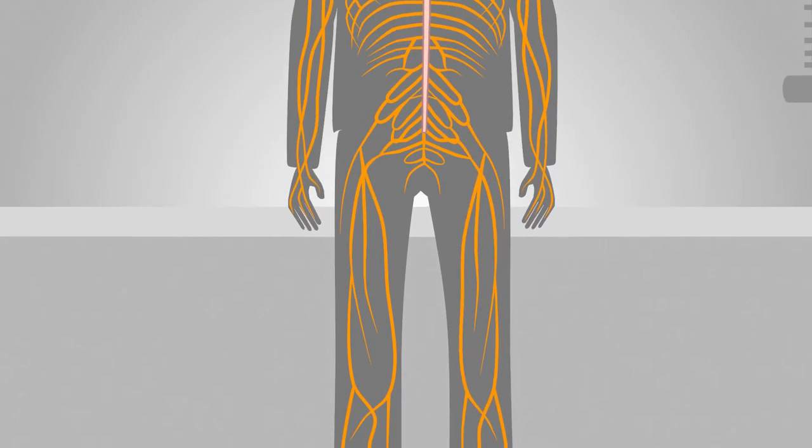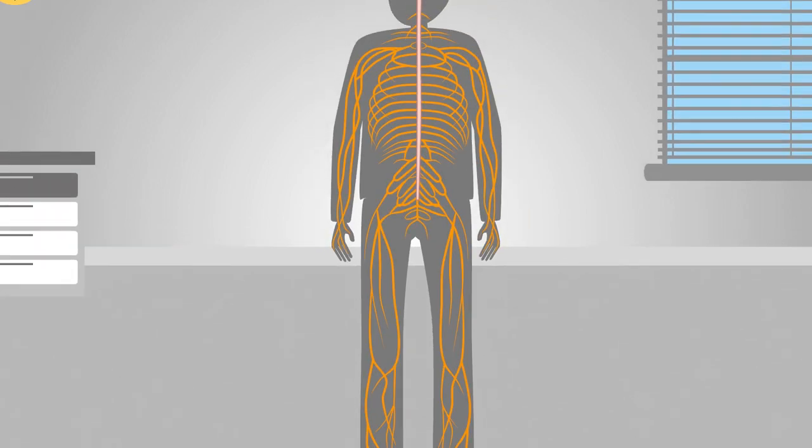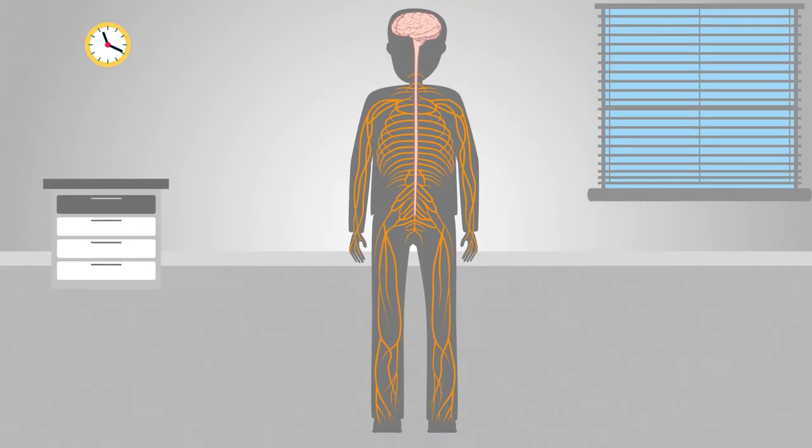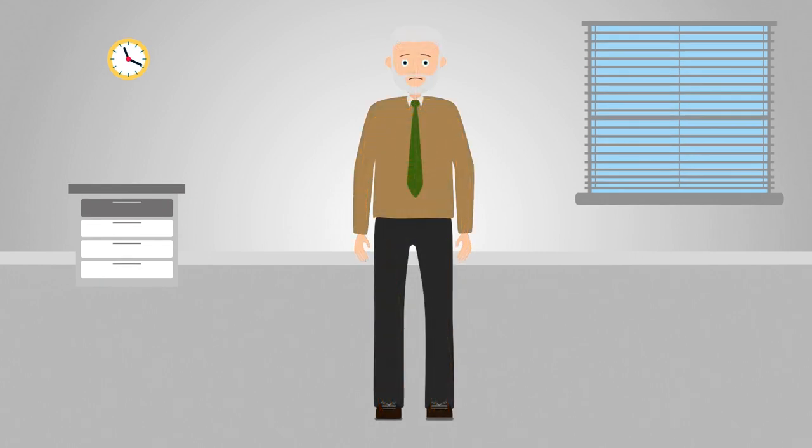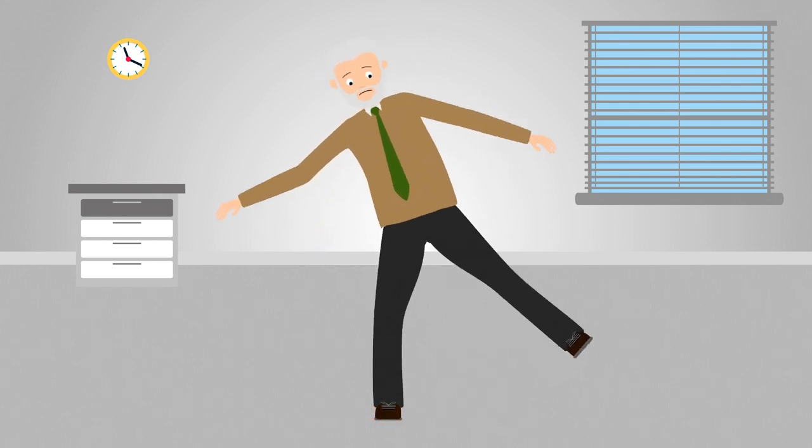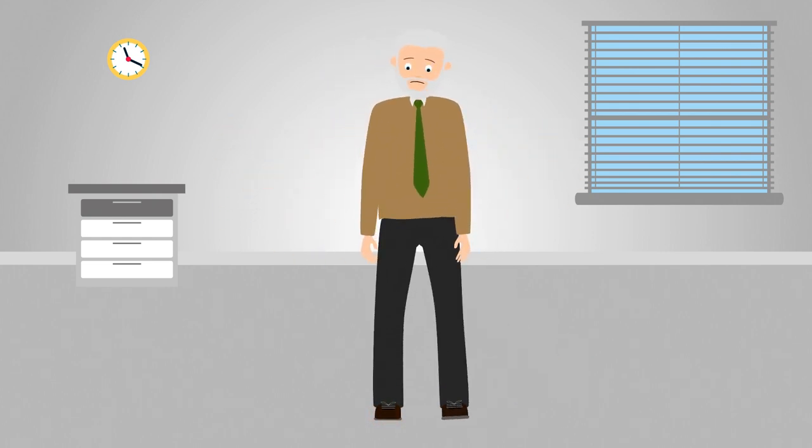Typically, it's caused by diabetes, trauma, toxic exposures like chemotherapy, or has no known cause. Nerve damage can cause chronic pain, numbness in the hands and feet, and balance problems. These debilitating symptoms greatly impact the patient's quality of life.